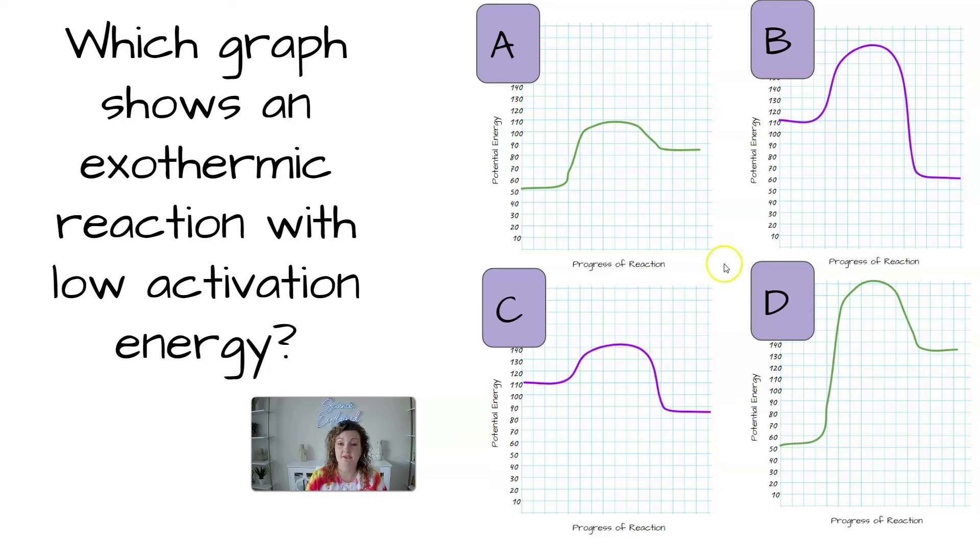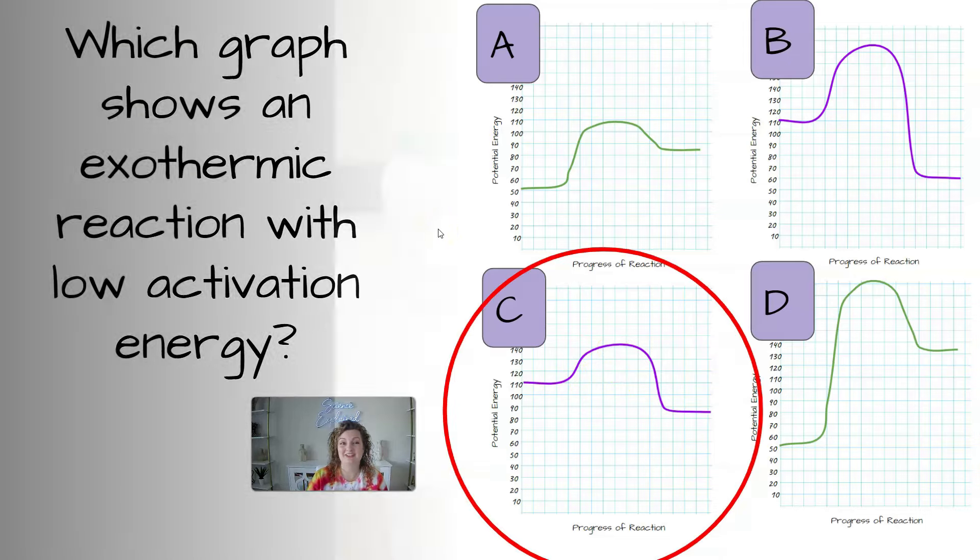The purple graphs are exothermic. Our green graphs are going to be endothermic. So we've already narrowed it down 50-50. And then which one has a low activation energy? Remember, activation energy is going to be from your reactants all the way to the top. So the lower one is going to be C. Hopefully you guys got that one right.